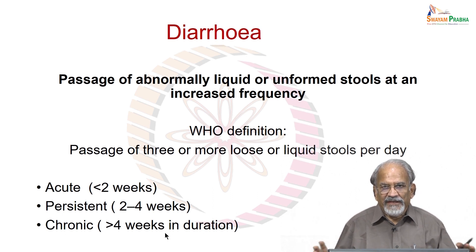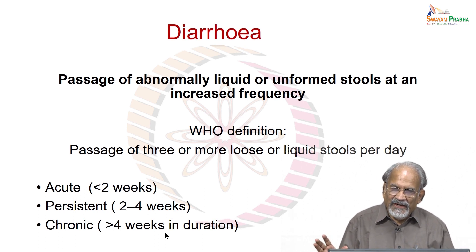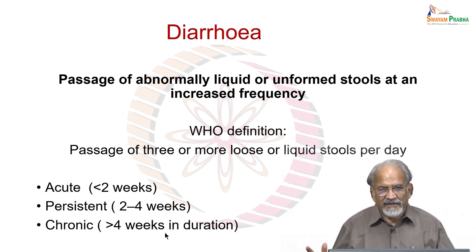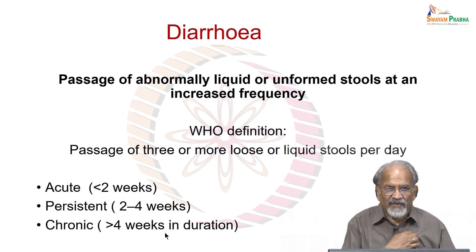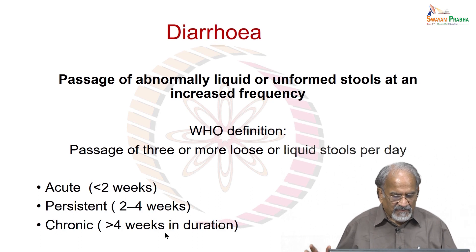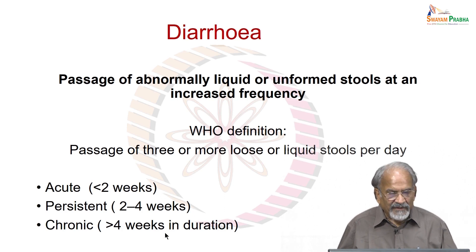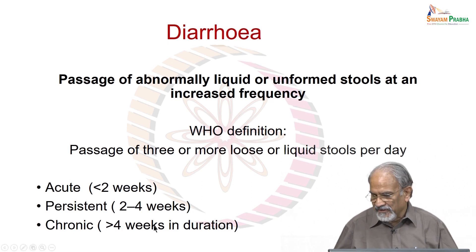Diarrhea can be acute, which is if it lasts for less than 2 weeks. It can be because of disease, infection, or any side effect. Persistent diarrhea is when it lasts more than 2 weeks to 4 weeks. Chronic diarrhea is when the duration is more than 4 weeks, particularly in irritable bowel syndrome or sometimes other conditions.